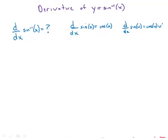At the moment we don't know the derivative of sine inverse of x. We do know the derivative of sine x is cosine x, and we can generalize using the chain rule. The derivative of sine u is cosine u times u prime.